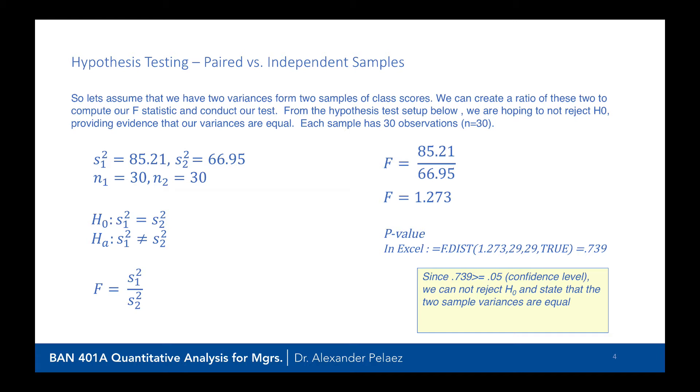We do a true, and we end up with 0.739. Since 0.739 is greater than 0.05, we cannot reject the null hypothesis, and we can therefore state that the sample variances are equal.